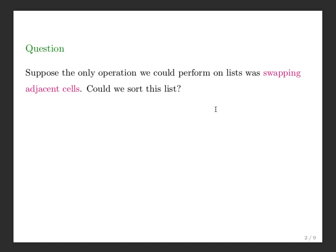So in the same spirit of that problem, where we restricted ourselves to exactly one type of operation on the list, I'm now going to restrict us to swapping adjacent cells. So if the only thing we're able to do in a list is swap adjacent cells, could we sort a list using only adjacent swaps?